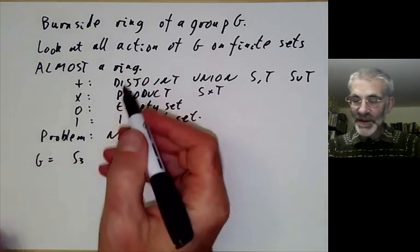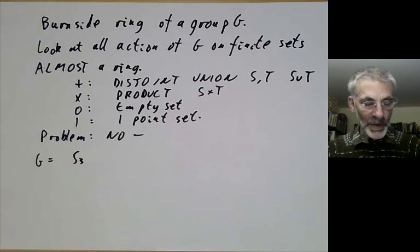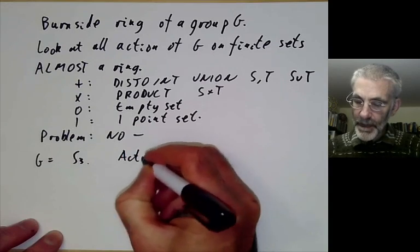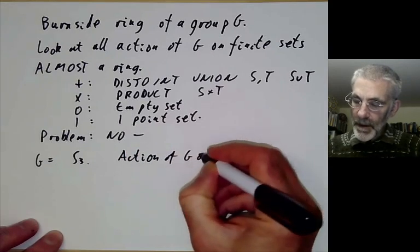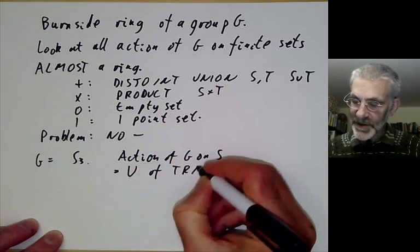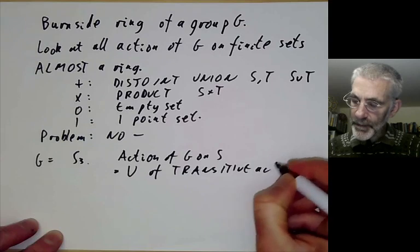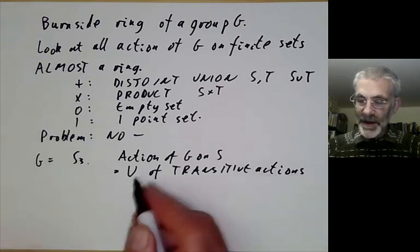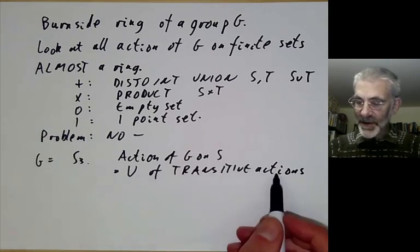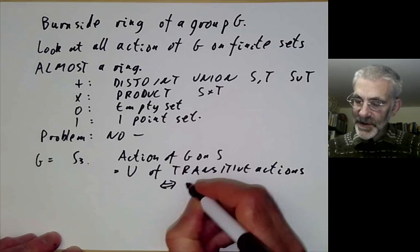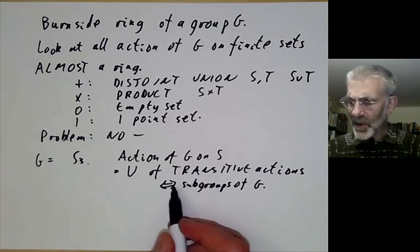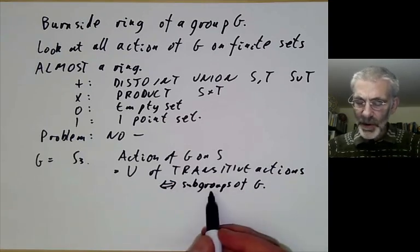What does this thing that isn't quite a ring look like? Any action of G on S can be split up as a union of transitive actions. We can decompose S into its orbits under G, and each will be a transitive action. Transitive actions correspond to subgroups of G up to conjugacy.